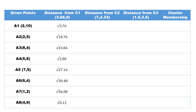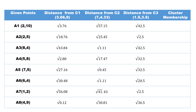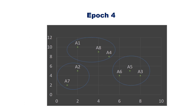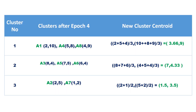Compute the distance from the new cluster centers: distance from (3.66, 9), distance from (7, 4.33), distance from (1.5, 3.5). Assign points to the nearest cluster: A1 → C1, A2 → C3, A3 → C2, A4 → C1, A5 → C2, A6 → C2, A7 → C3, A8 → C1. After the fourth iteration, there is no change in cluster membership — the clusters have converged after the third iteration, so we can stop the clustering process. Here is the final cluster and cluster centroid. This is how we perform k-means clustering.